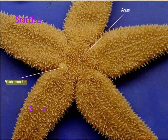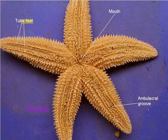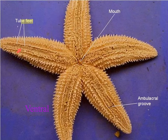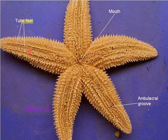On the next slide we flip the starfish so we're looking at the belly side, the ventral side. Right here is the mouth. It everts or vomits up its stomach for absorption. Right along here we have the tube feet, and the tube feet move due to water pressure.